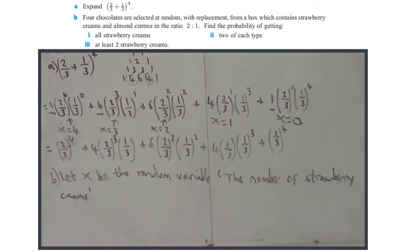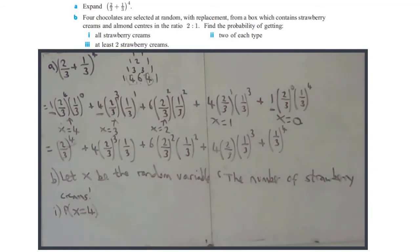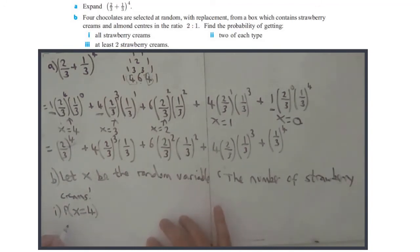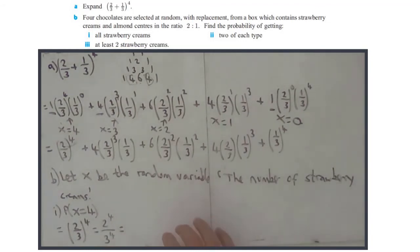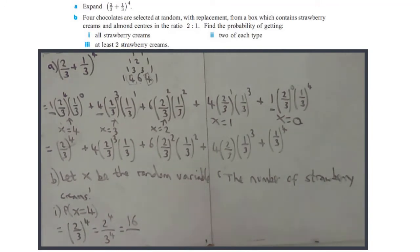So we can now answer the question. Part B1 should be really easy — we're finding the probability X equals four, which is literally one times two-thirds to the power of four times one-third to the power of zero. So it's just two-thirds to the power of four, which is two to the four over three to the four. Two to the four is 16, and three to the power of four is 81 — since three squared is nine, three cubed is 27, three to the four is 81. So the answer is 16 over 81.